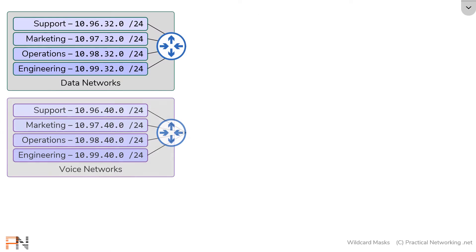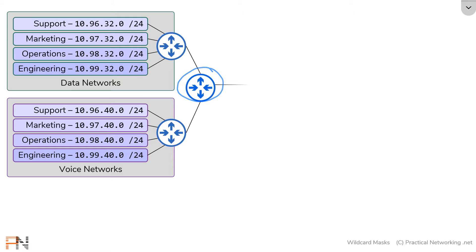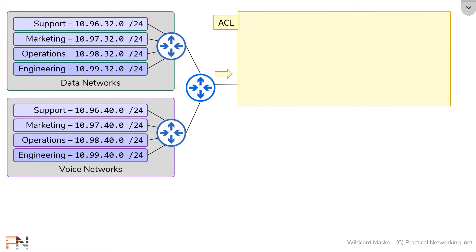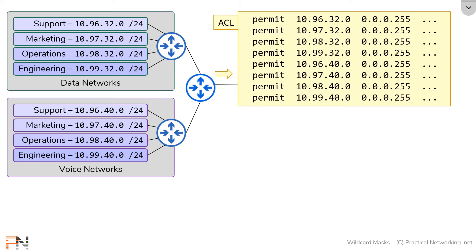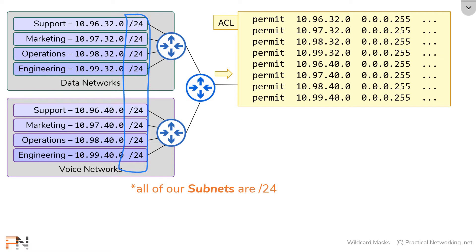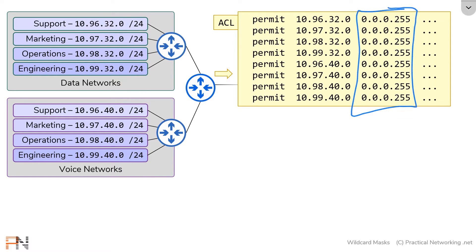Let's say this is your topology. You have four different teams — your support team, marketing team, operations team, and engineering team. Each of those teams has two different networks: one to carry its data traffic and one to carry its voice traffic. All that traffic is going to aggregate onto this router, and let's say on that router you want to add an access control list allowing that traffic to go somewhere. That ACL would look something like this. Your ACL would have a bunch of permit statements with network IDs correlating to the ones in your topology. Since all of our networks are slash 24, you'd be using a wildcard mask that correlates to a slash 24.